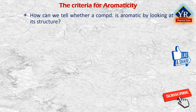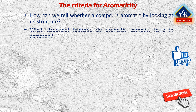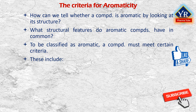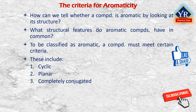The criteria for aromaticity: how can we tell whether a compound is aromatic by looking at its structure? In other words, what structural features do aromatic compounds have in common? To be classified as aromatic, a compound must meet certain criteria. These include: a molecule must be cyclic, planar, completely conjugated, and contain a particular number of pi electrons.